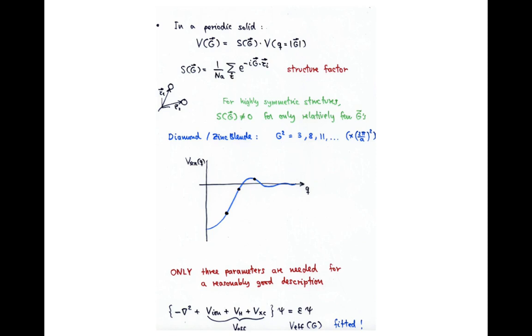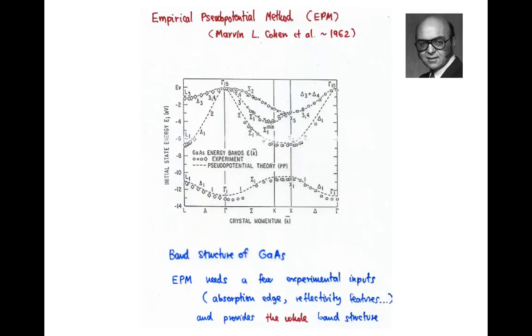You can fit these three numbers to experimental information and you have the empirical pseudopotential method that Marvin Cohen and co-workers developed in the early 60s.